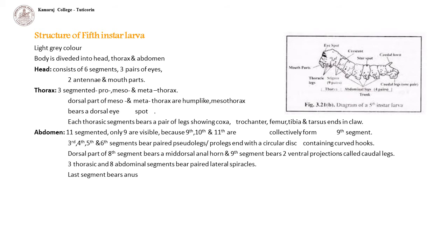Structure of the 5th instar larva: light gray colored body divided into head, thorax and abdomen. Head consists of 6 segments showing 3 pairs of simple eyes, 2 antennae and mouth parts: 1 labrum, 2 mandibles, 2 maxillae and a labium. Thorax is 3-segmented — prothorax, mesothorax and metathorax. Dorsal parts of meso- and metathorax are hump-like. Mesothorax bears a dorsal eyespot. Each thoracic segment bears a pair of legs showing coxa, trochanter, femur, tibia and tarsus, which ends in a claw.